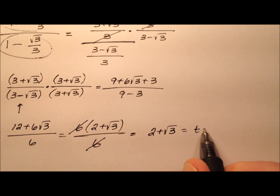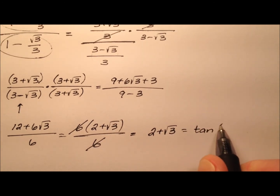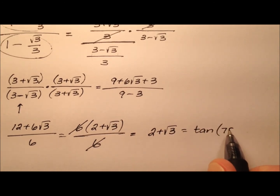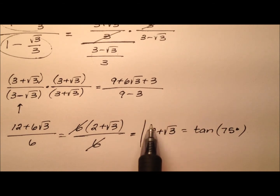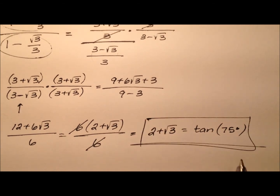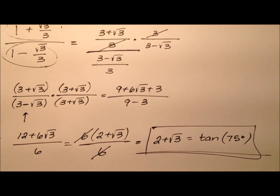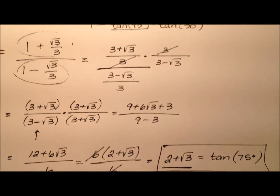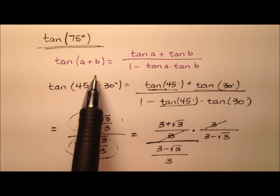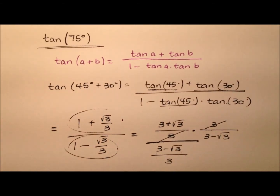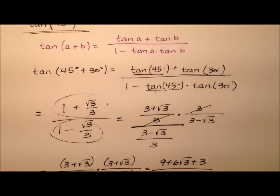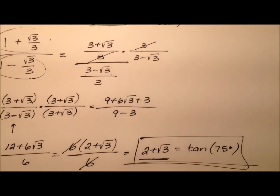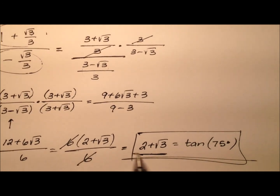So I'm left with 2 plus radical 3, and that will be the exact value for the tangent of 75 degrees. In this first case, we got this exact value by using the sum identity for tangent.